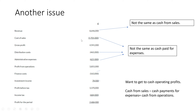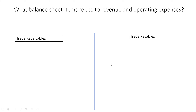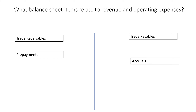We need to think about which balance sheet items relate to revenue and operating expenses. We have trade receivables — debit trade receivable, credit revenue — which represents unpaid revenue. Trade payables represent unpaid expenses. Prepayments are adjustments for expenses paid early. Accruals are unpaid expenses. And movements in inventory are reflected in cost of sales.